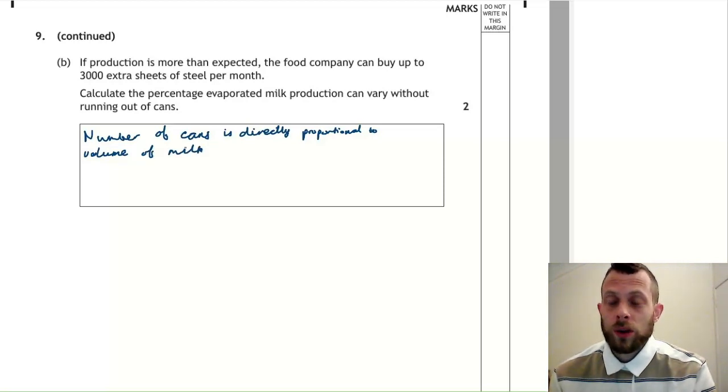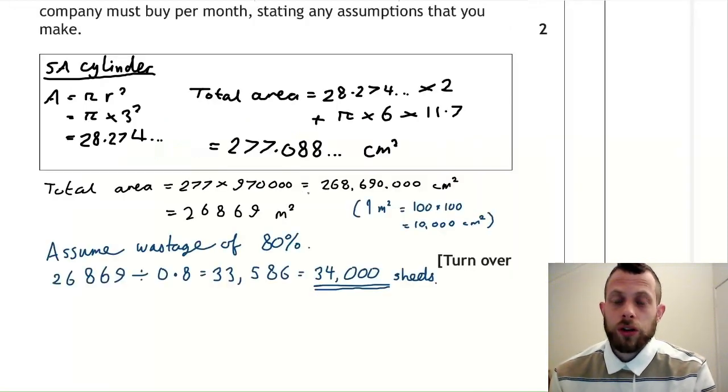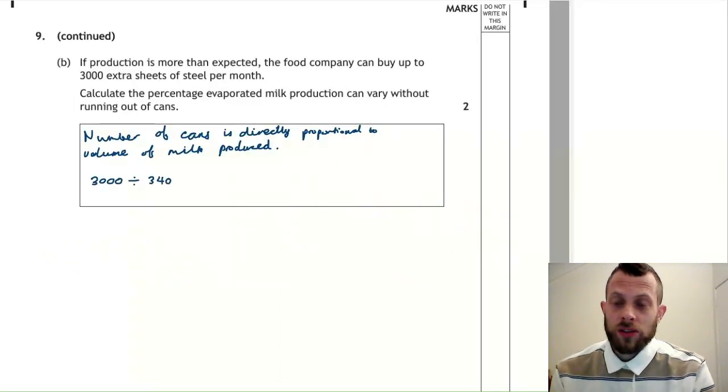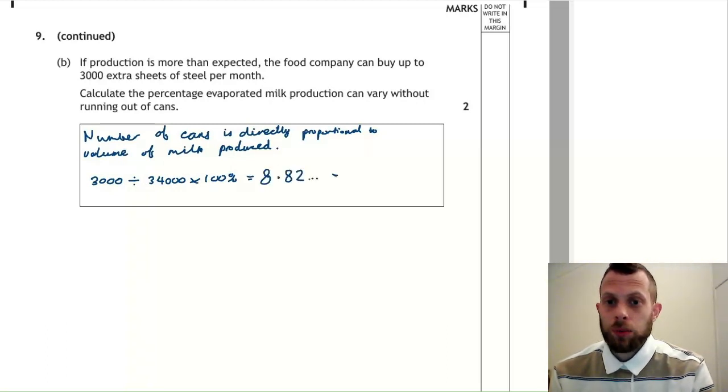So all we need to do is work out what percentage of the amount of steel that we have is the 3000. So let's go back and look at the previous answer to part A. And we used 34,000 sheets. Now, if you'd made different assumptions, then your numbers would be different. So how do we find 3000 as a percentage of 34,000? Well, that would be 3000 divided by 34,000 times 100%. And this would work out as 8.82% or if you round it, 9%. And that's finally done.